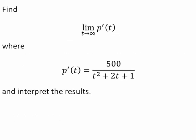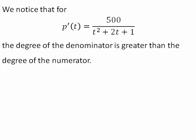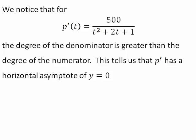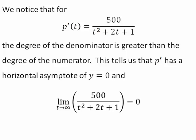Find the limit as t goes to infinity of p prime and interpret the results. We notice that for p prime, the degree of the denominator is greater than the degree of the numerator. This tells us that p prime has a horizontal asymptote of y equals 0. And so the limit of p prime as t increases will be 0.